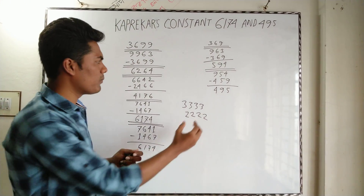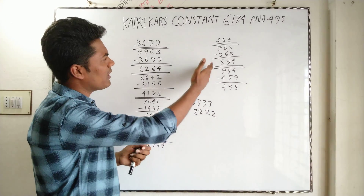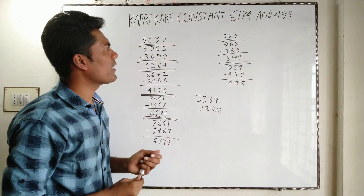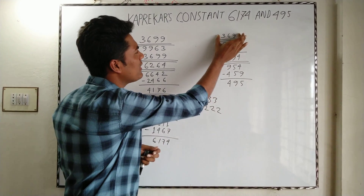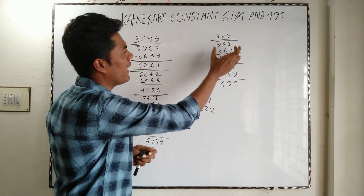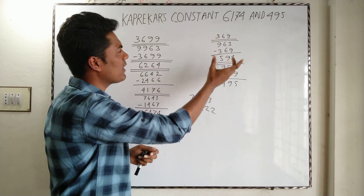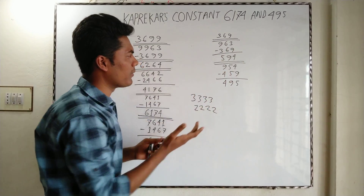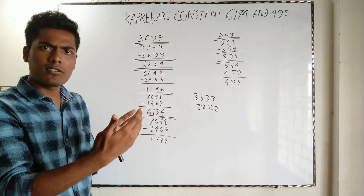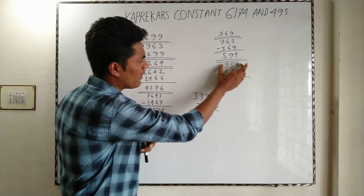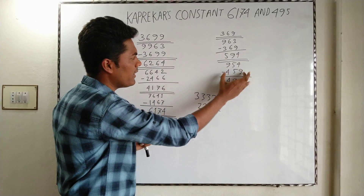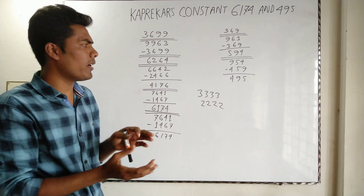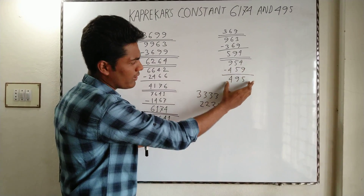Here I take the three-digit number 369. I rearrange it from largest to smallest, then from smallest to largest, and subtract the smaller from the larger to get 594. Repeating the process — rearranging and subtracting again — I get 459, and subtracting once more gives 495, which is the Kaprekar's constant for any three-digit number.